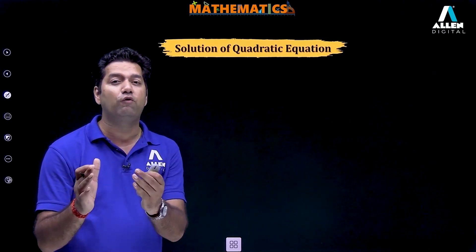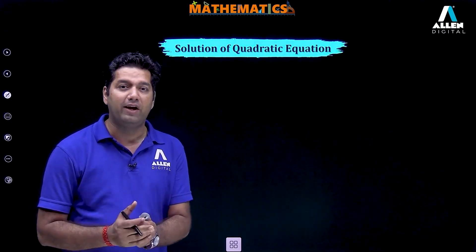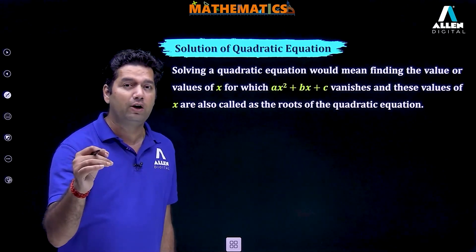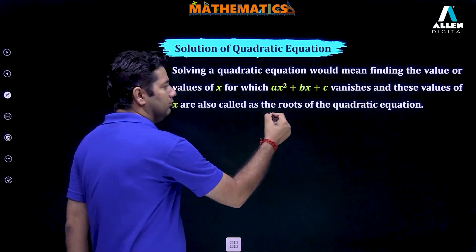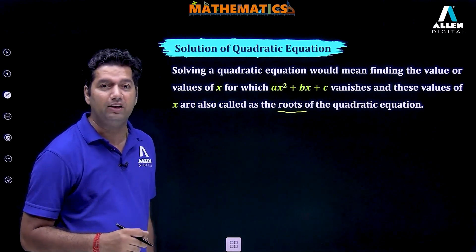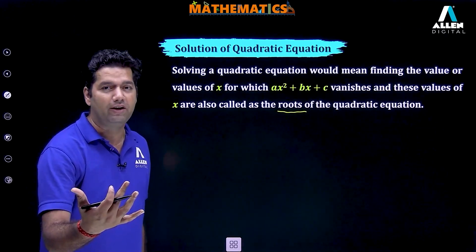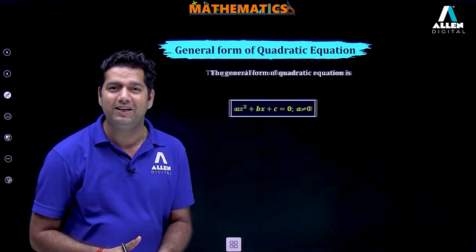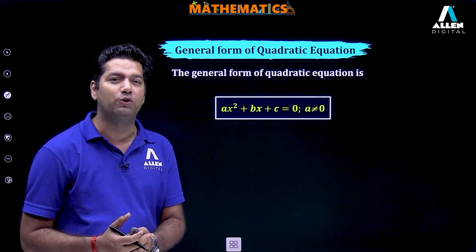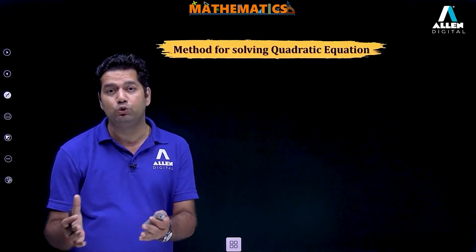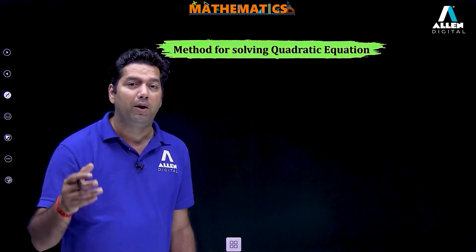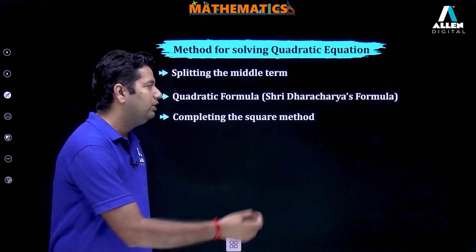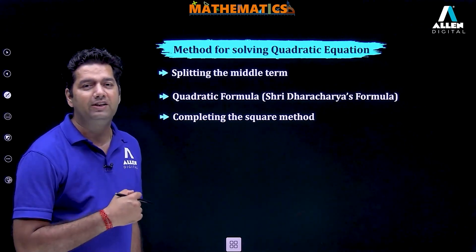Moving to solution: those values of x at which ax square plus bx plus c vanishes or becomes equal to 0 are known as the roots of the quadratic equation, and these are the solutions. The general form is ax square plus bx plus c equal to 0 where a is not equal to 0. The methods used to solve a quadratic equation are: first, by factorization — factorizing by splitting the middle term; second, by quadratic formula or Sridharacharya's formula; and third, by completing the square method.